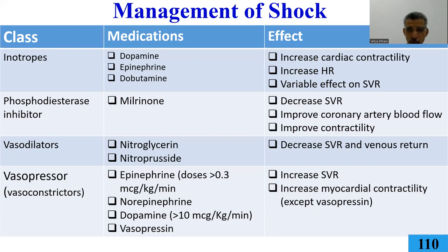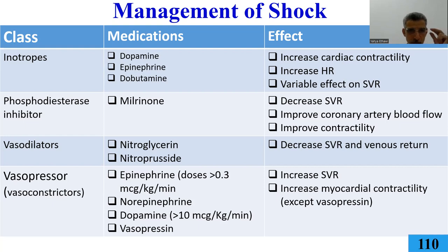Vasodilators can decrease systemic vascular resistance and improve venous return for low cardiac output states. Vasopressors: epinephrine affects the heart; norepinephrine affects the periphery; vasopressin/desmopressin use depends on sodium and edema status. If sodium is high (140-150) with dehydration, norepinephrine plus volume is the best solution. We will learn more about inotropes.